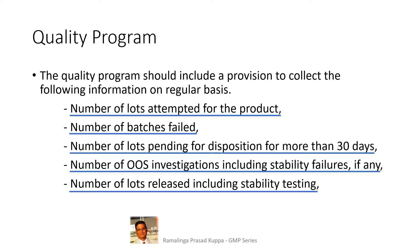Number of lots released including stability testing: details of the number of batches released and stability studies conducted should be provided. All this information should be tabulated for easy reference to submit to FDA. There is a timeline within which the data should be submitted. For example, if FDA requests quality metrics data from October 1st, 2016 to September 30th, 2017, you are supposed to provide the data before December 1st, 2017. This is how FDA works on quality metrics. FDA may also request for any additional data.